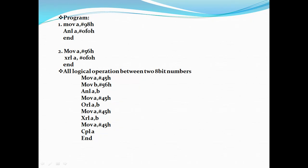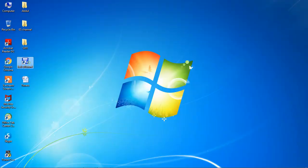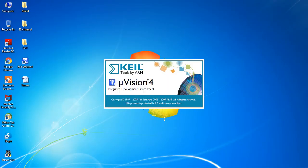Another example takes two different numbers in A and B and performs all logical operations. For AND operation with A and B, the result saves in the accumulator, so you need to reassign the number to A. Then perform OR operation with A and B, reassign the first number to A, perform XOR with A, reassign the value to A, and finally the complement operation. To check the output of these programs, use the Keil µVision IDE.